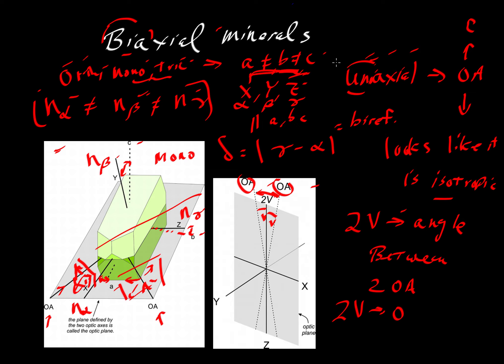So we now have a third optic property compared to what we saw before. We have the indices of refraction, three of them instead of one for isotropic and two for uniaxial.